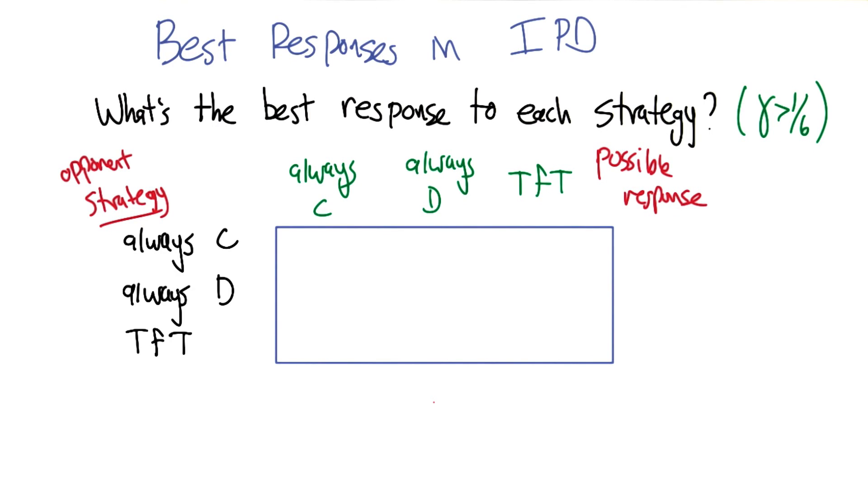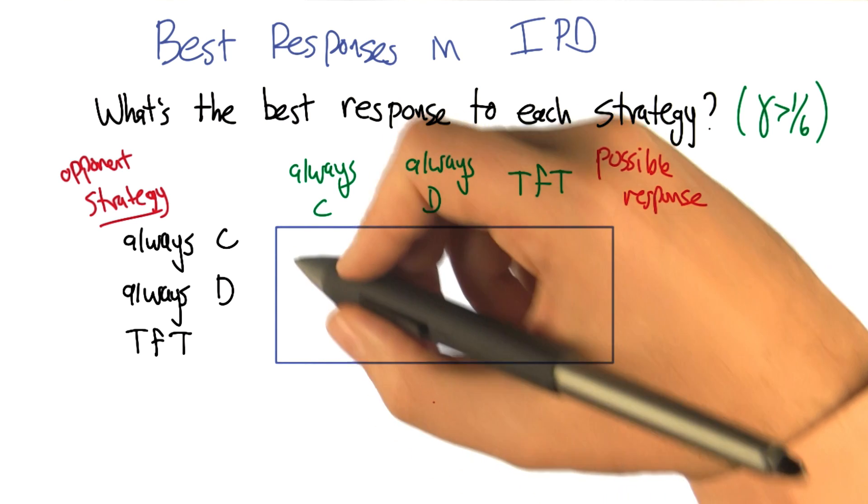All right, so is this clear what these answers are? Let's find out. We already worked out the math on this, so we know that for gamma greater than 1/6, cooperating is better than defecting in general. So if I'm going against someone who's always going to cooperate, then I should always cooperate.